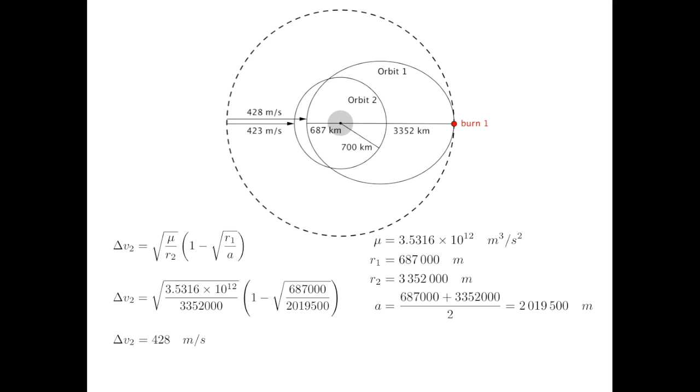Now look at the diagram carefully, and consider what must be the delta v requirement for burn 1, which raised the periapsis of our orbit from 787 kilometers to 700 kilometers. I'm hoping that you realize that it is going to be the difference in the two delta v's that we just calculated. That is, the delta v for burn 1 is 428 minus 423, or just 5 meters per second.